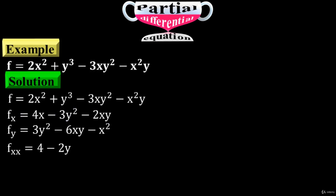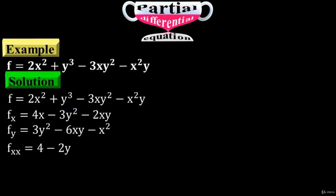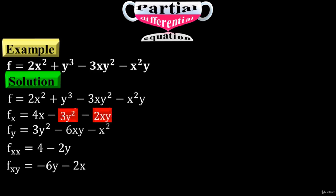Now differentiate f sub x with respect to y. These are the two terms with y variables, so just differentiate them with respect to y to have f sub xy equals minus 6y minus 2x.